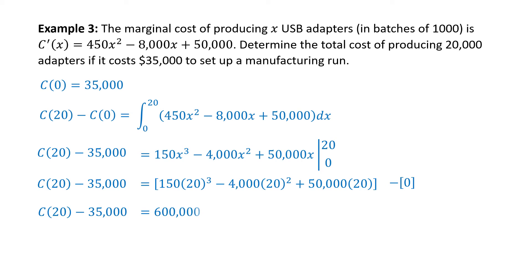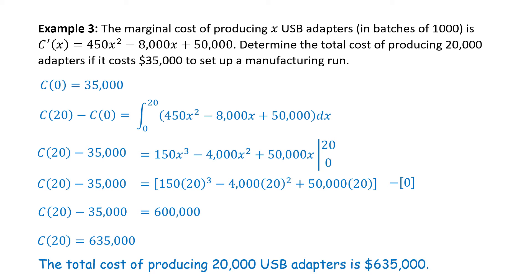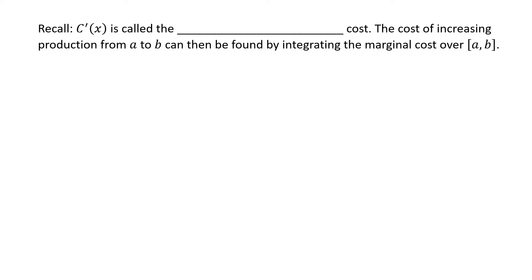Computing the arithmetic, the result is 600,000. Adding 35,000 to both sides, we solve for the total cost: C of 20 equals 635,000. The total cost of producing 20,000 USB adapters is $635,000. Quick reminder: C prime of x is the marginal cost function. The cost of increasing production from A to B can be found by integrating the marginal cost over the closed interval from A to B.